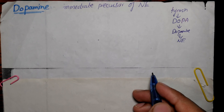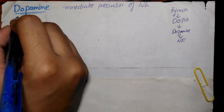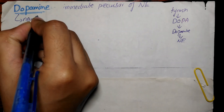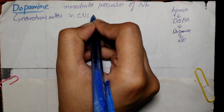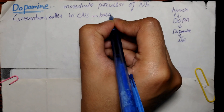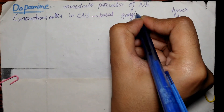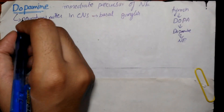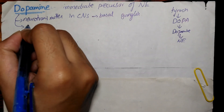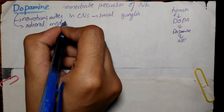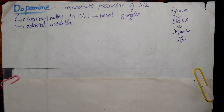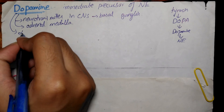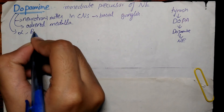Dopamine also naturally occurs in the CNS as a neurotransmitter, specifically in the basal ganglia where it functions as a neurotransmitter, as well as in the adrenal medulla where it also acts as a neurotransmitter. Dopamine can activate both alpha as well as beta receptors.